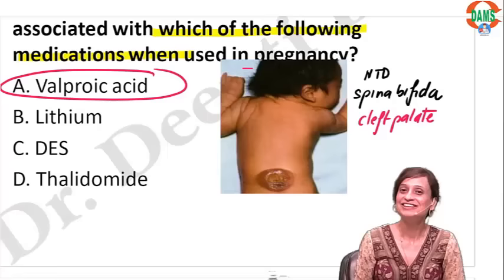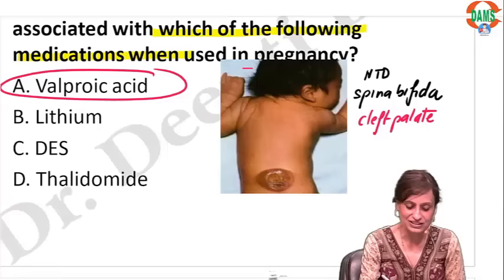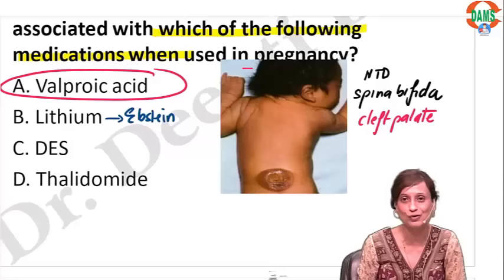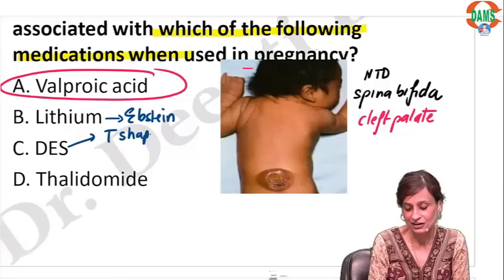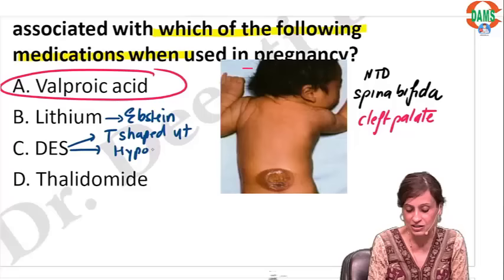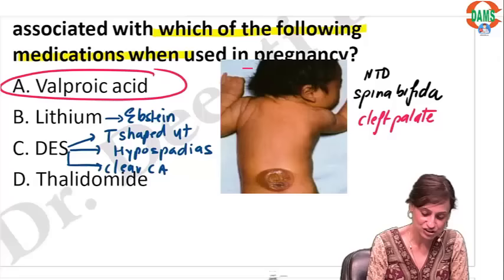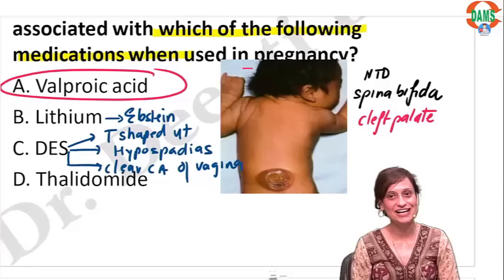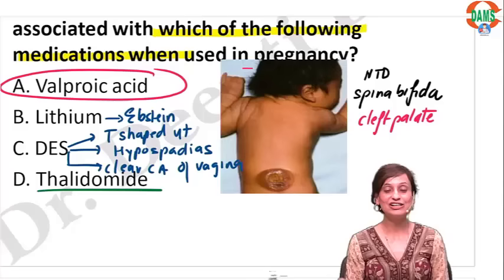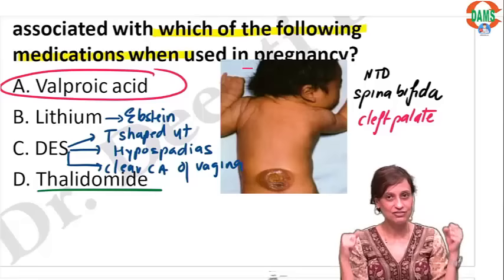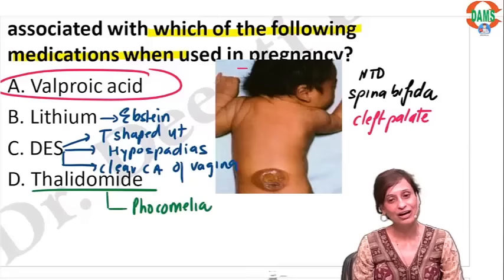What is the classic anomaly seen with lithium? Ebstein's anomaly. What about diethylstilbestrol? It causes a T-shaped uterus, hypospadias, and clear cell cancer of the vagina. What about thalidomide? A newborn who looks like a flipper — the entire upper limbs are absent and the hands are attached to the body. Thalidomide causes phocomelia, which is a proximal limb defect.